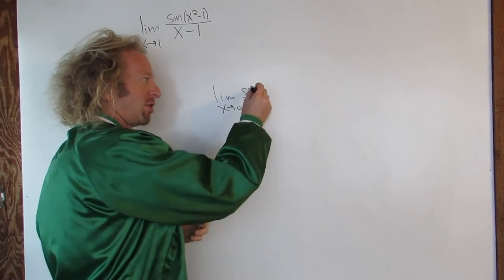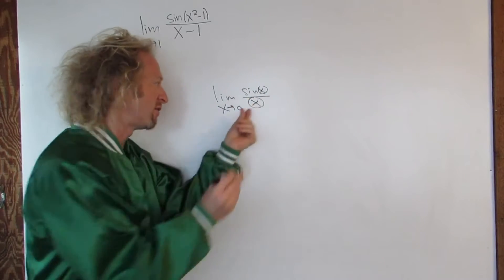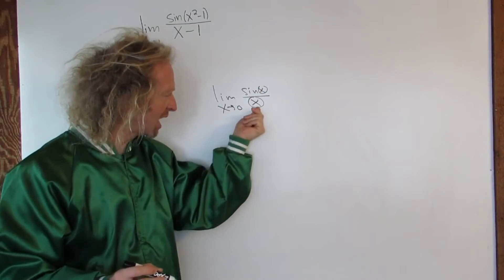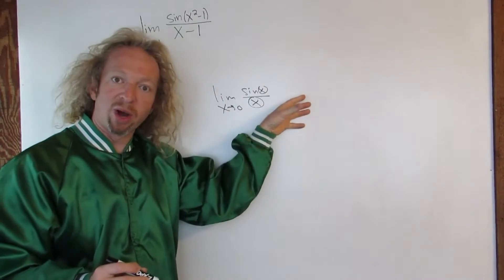And so basically whenever these match, whenever these are the same, and whenever this quantity x goes to 0, you get 1. So whenever you have something like this, you're going to get 1.